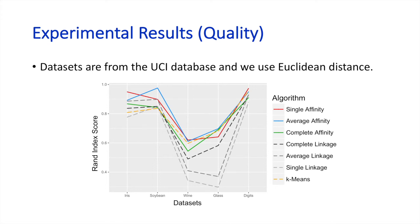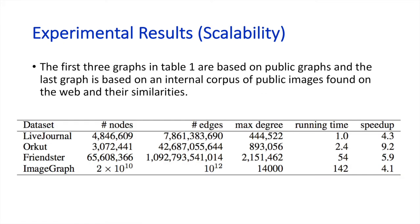We mainly have two sets of empirical results. Our first experiments show that different variants of Affinity generally produce higher quality clusters than many other methods. Our second set of experiments measure the scalability of our algorithms and show that graphs with trillions of edges could be clustered in a reasonable time.